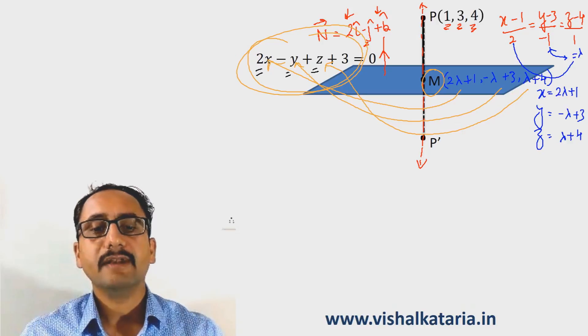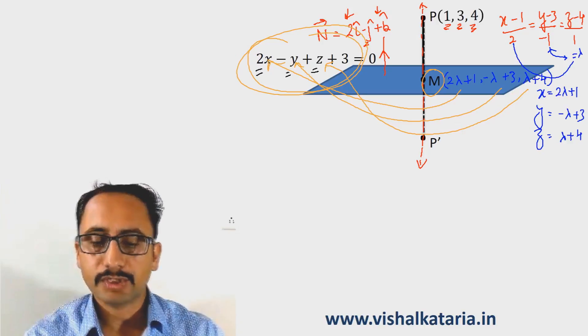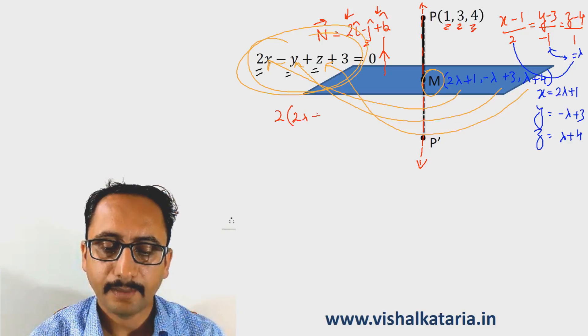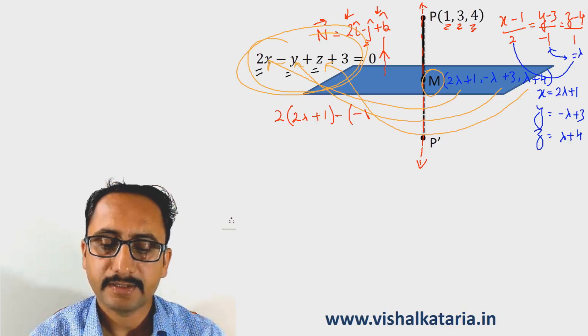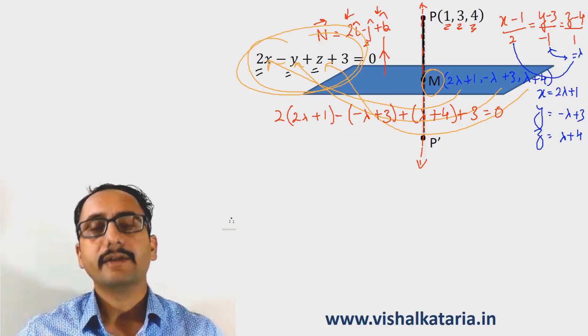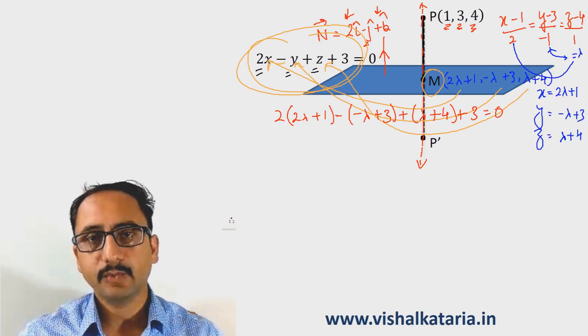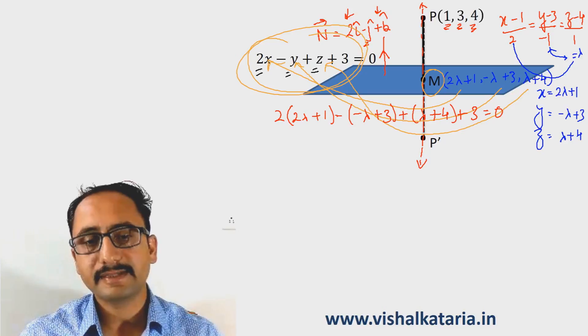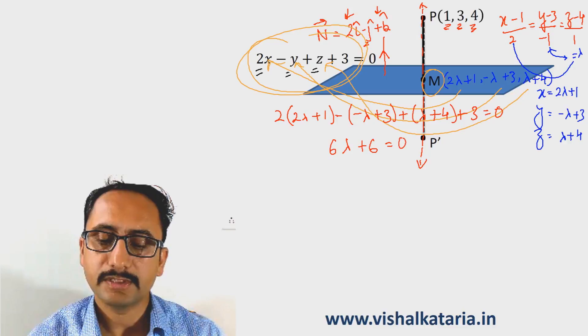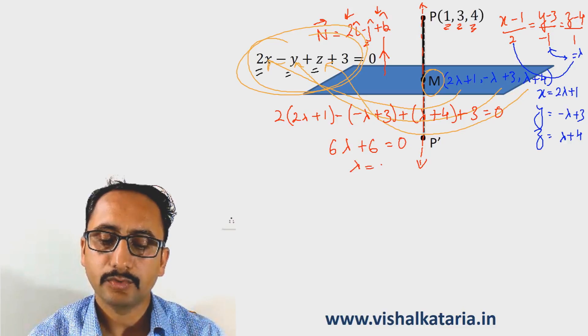If I substitute the values of x, y, z coordinates, the equation will be 2(2λ + 1) - (-λ + 3) + (λ + 4) + 3 = 0. Solving this linear equation in one variable, we get 6λ + 6 = 0, and λ = -1.